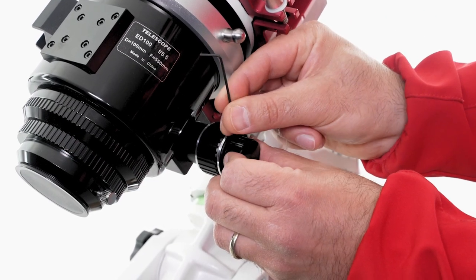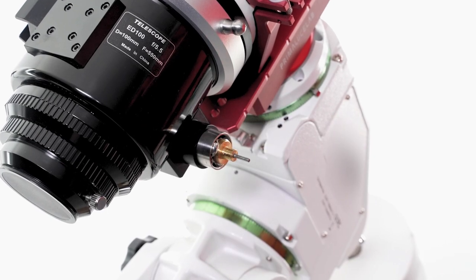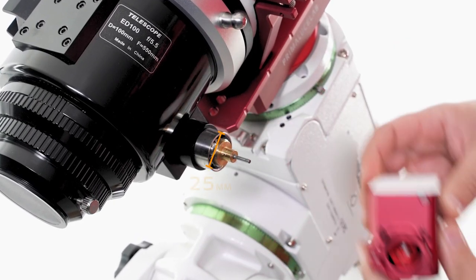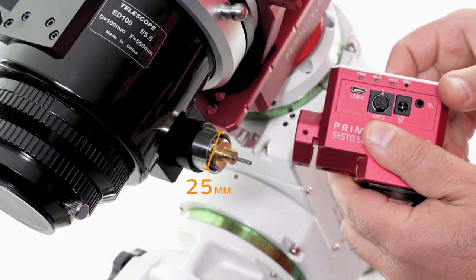You just have to remove your focuser's fine and coarse focus knobs and here you will find a large shaft. Most of the focusers in the market have 25mm diameter shaft and the self-centering clamp of the Sesto Senso is designed specifically to clamp to this diameter right out of the box.